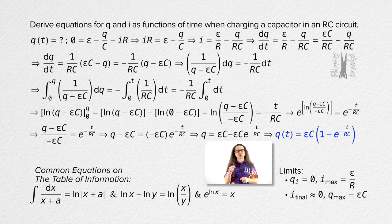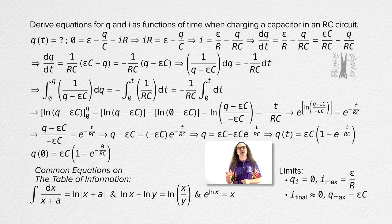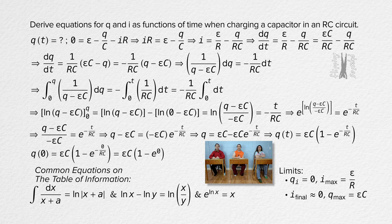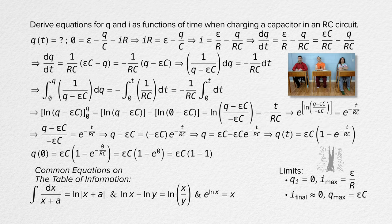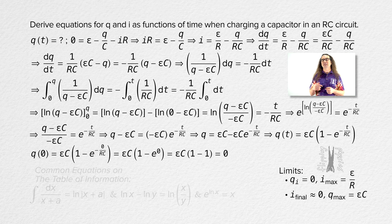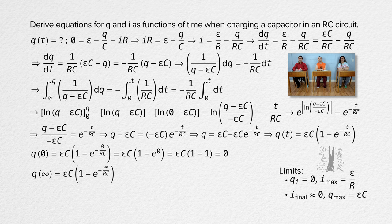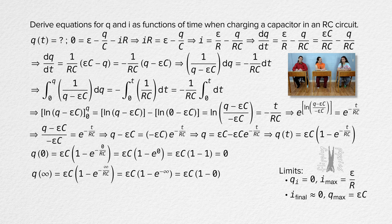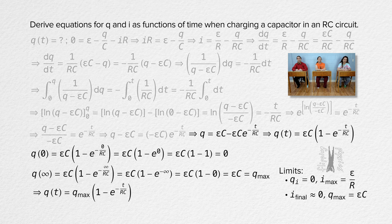Notice this equation fits our limits. When time t equals zero, e to the power of zero equals one, so the charge on the capacitor is zero. When time equals infinity, e to the negative infinity equals zero, so the charge equals EMF times capacitance, which is the maximum charge on the capacitor. We can substitute charge maximum into the equation for charge as a function of time.